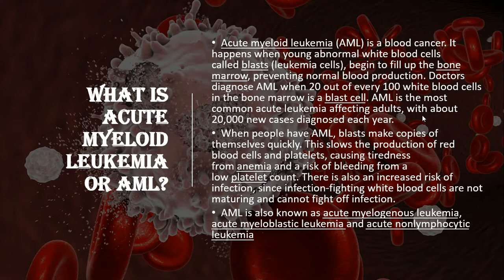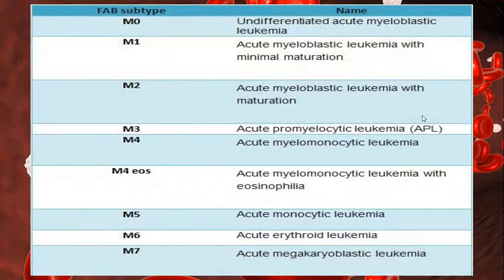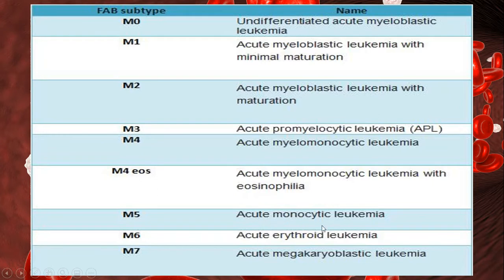AML is also known as acute myelogenous leukemia, acute myeloblastic leukemia, and acute non-lymphocytic leukemia. According to the FAB classification: M0 is undifferentiated acute myeloblastic leukemia, M1 is acute myeloblastic leukemia with minimal maturation, M2 is acute myeloblastic leukemia with maturation, M3 is acute promyelocytic leukemia (APL), M4 is acute myelomonocytic leukemia, M4Eo includes eosinophilia, M5 is acute monocytic leukemia, M6 is acute erythroid leukemia, and M7 is acute megakaryoblastic leukemia.